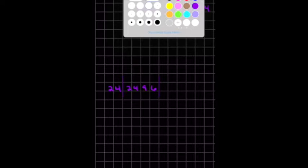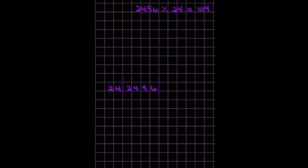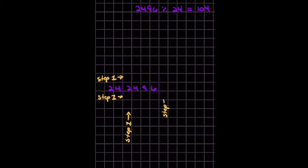Okay, let's color code this. So 24 — does it go into 2? I'm going to use this column first. This is my first step. Step 1. So does 24 go into this 2? No, it doesn't. 0 times.